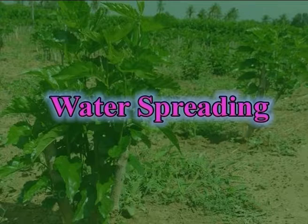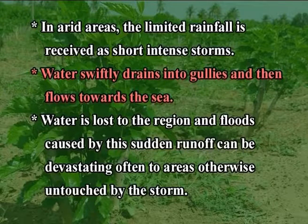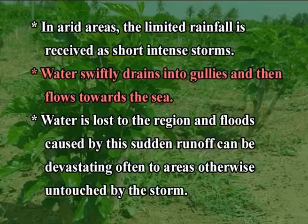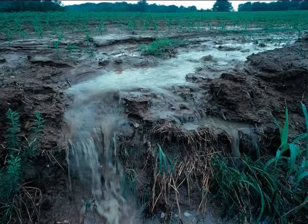Water spreading: in arid areas, limited rainfall is received in short intense storms. Water swiftly drains into gullies and flows towards the sea, causing floods that can be devastating to areas otherwise untouched by the storm. Water spreading is a simple irrigation method for such situations. Flood waters are deliberately diverted from their natural course and spread over adjacent plains. The diverted water is retarded by ditches, small dams and brush fences, and the wet floodplains or valley floors are thereby used to grow crops.